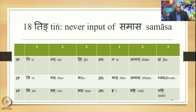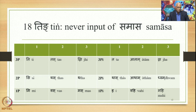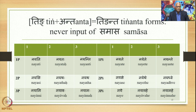Te is third person singular, Tas is third person dual, and Jhi is third person plural, and so on and so forth. The second set of nine suffixes includes: Ta, Atam, Jha, Tas, Atam, Dhvam, I, Vahi, and Mahi. These nine suffixes — Ta, Atam, Jha, etc. — are termed atmanepada suffixes in Paninian grammar, by the sutra tanganav atmanepadam. The point to be remembered is that these suffixes never become an input of a Samasa, which means that any pada at the end of which these suffixes occur can never be an input of a Samasa.